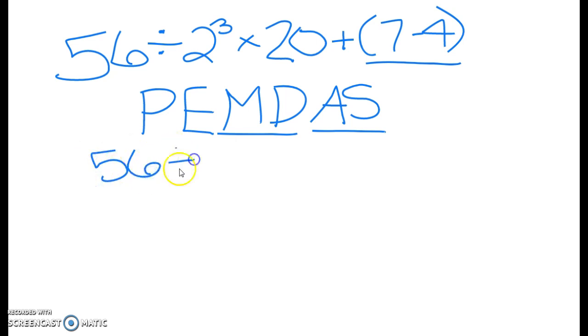So everything else we'll just get carried down. But we solve what's in the parentheses, and obviously seven minus four is three.